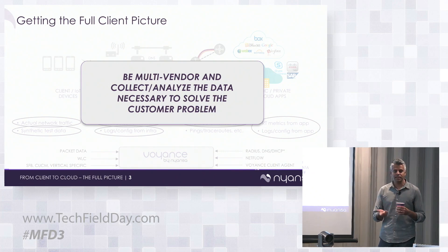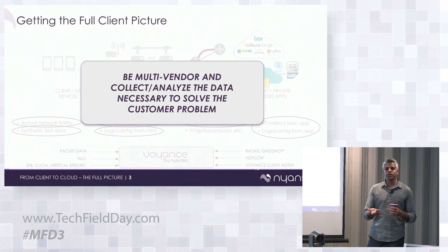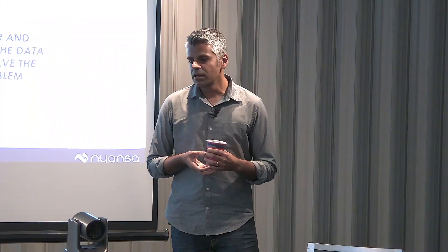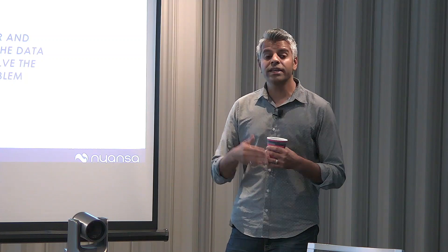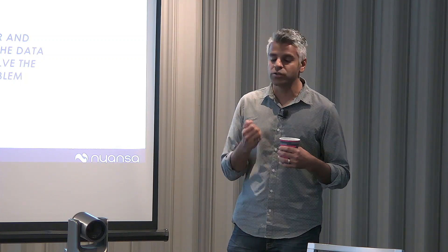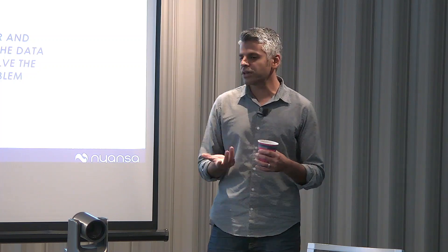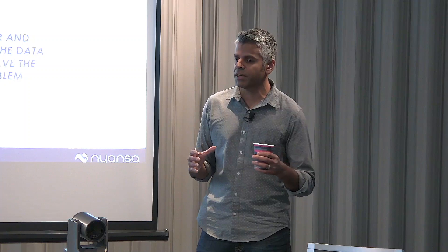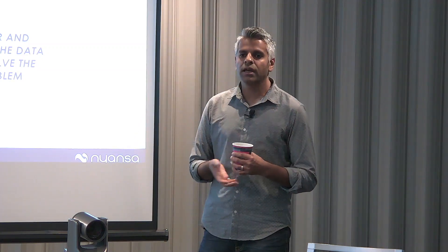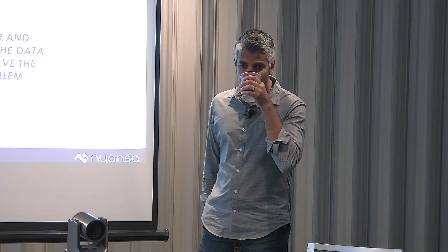The other side is going to the data sources that matter. There's horizontal multi-vendor data, but in specific customer verticals the most critical problems may require specific data — for example, in regulated industries Citrix is critical, so taking data from Citrix and correlating it with wireless and routers is the key. Our philosophy is to identify what the most critical problems are for the customer. Some are universal, but in certain verticals the application itself has useful data to correlate with.